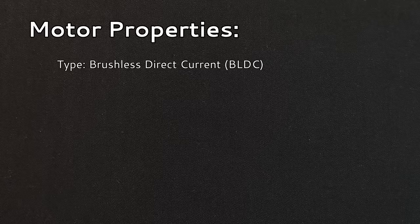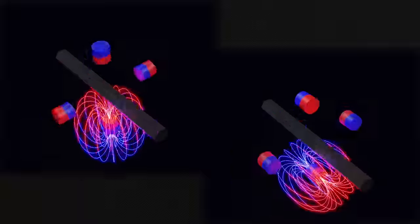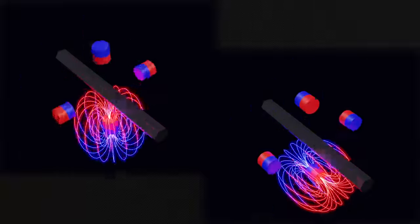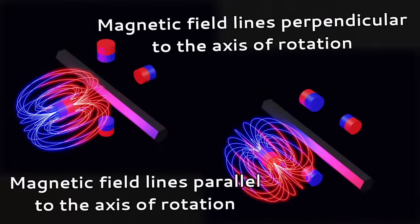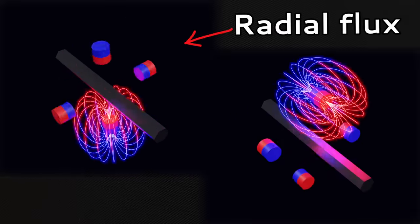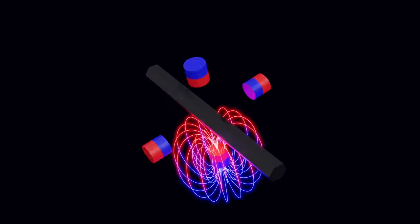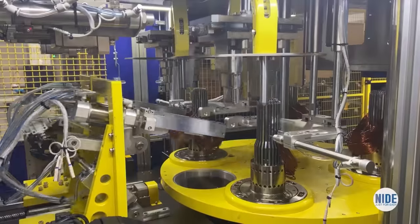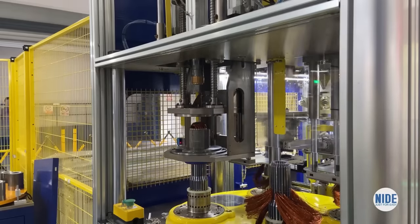So instead the electromagnets in the motor are controlled from an electronic speed controller. Next, I had to decide whether I was going to make a radial flux or an axial flux motor. The difference between the two is the orientation of the magnets. The magnets can be perpendicular or parallel to the axis of rotation, resulting in a radial flux or an axial flux design respectively.